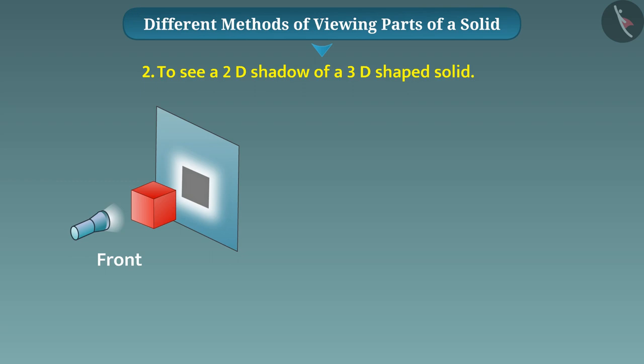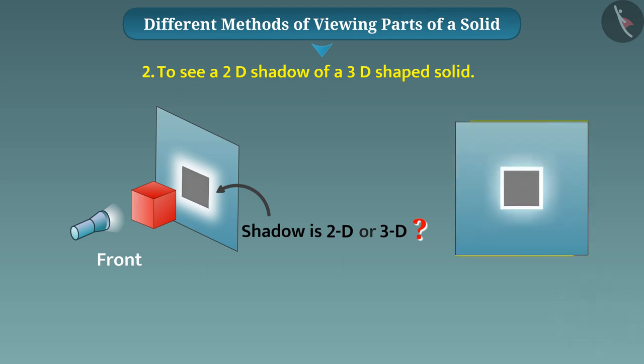Can you tell if the shadow is 2D or 3D? Think, think! Since the shadow occupies only one plane, we can say that the shadow has two dimensions. That is, it is a 2D shape. When we look carefully, we see that it is a square shadow.